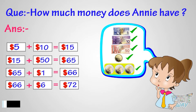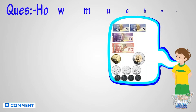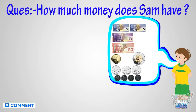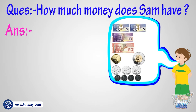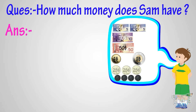Now, let's move to another question. If this money belongs to Sam, then how much money does Sam have? Sam has two five dollar bills, a ten dollar bill, a fifty dollar bill, a loonie, a toonie, three quarters, and four dimes.